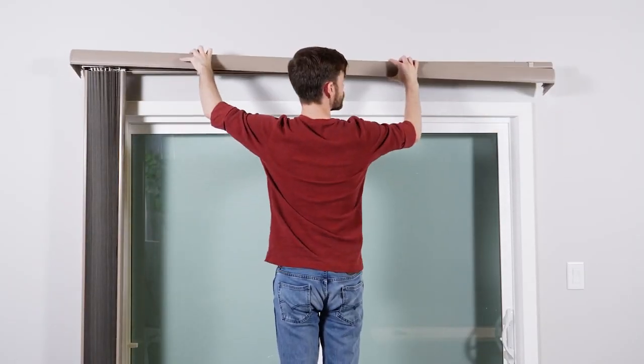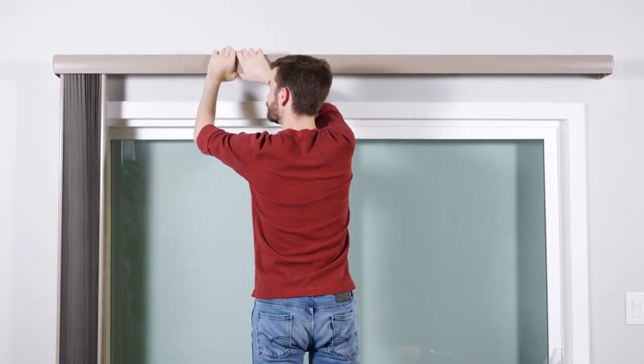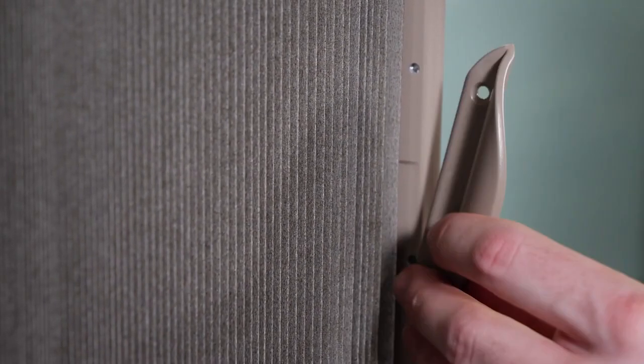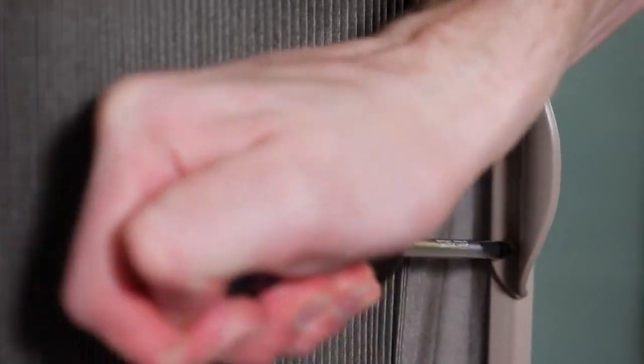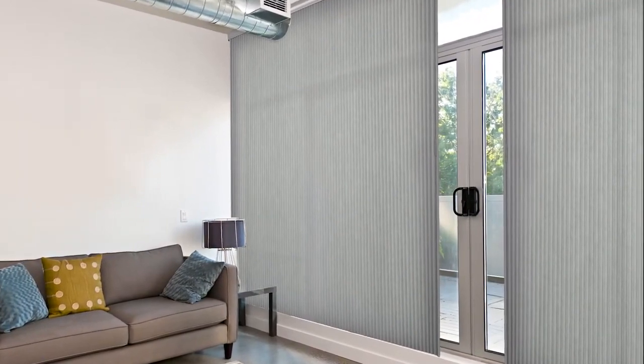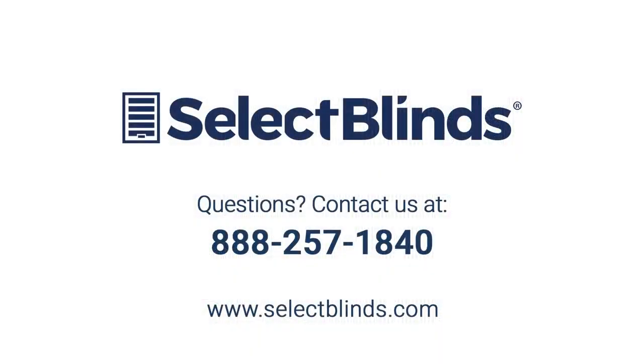Set the top of the valance onto the top of the clips first, then rotate downward until each clip catches the valance. Press firmly against each clip to make sure they snap into place. The last step is to attach the handle onto the moving rail. Line up the holes of the handle with the holes of the moving rail and secure the handle onto it with your screwdriver. And that's it! We hope you enjoy your beautiful new vertical cellular shade from Select Blinds. If you have any questions or need any additional help, please see your product's installation guide on our website, or just give us a call. We're here to help!